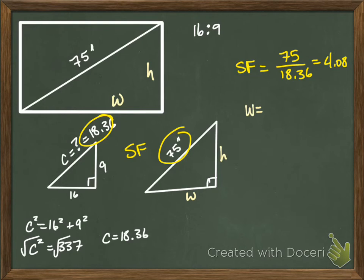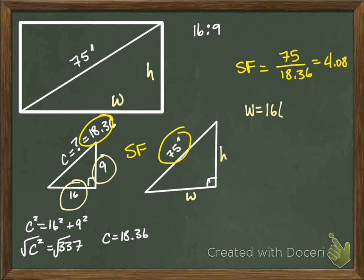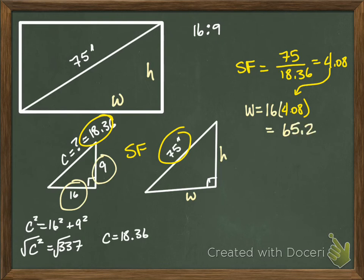Now that's what I use to find my measurements. So my width is going to be 16 times that, because I'm just taking the 16 and the 9 and multiplying them by the scale factor to get my width and my height. So this is going to be 16 times 4.08. I like the colors because it kind of reminds you where the things came from. 16 times 4.08, I get 65.28 inches.